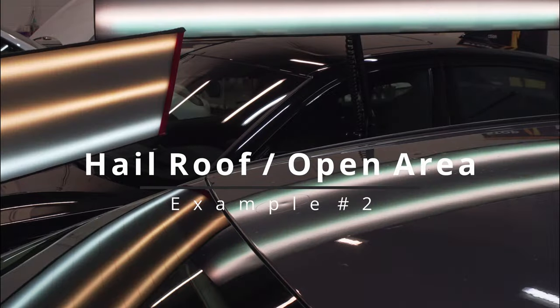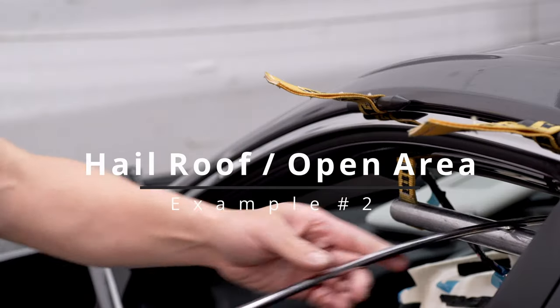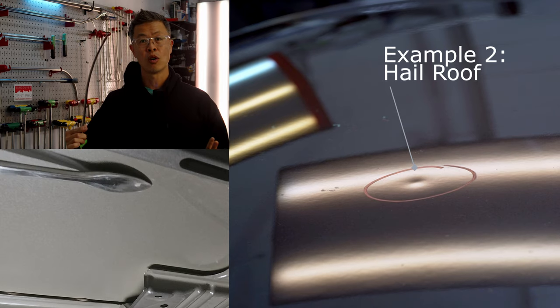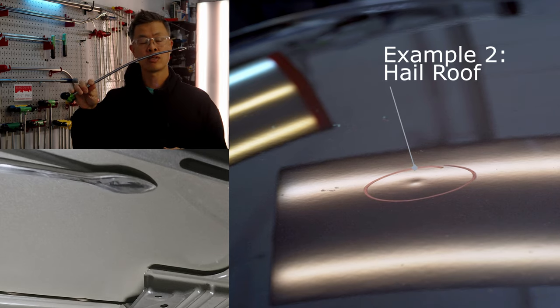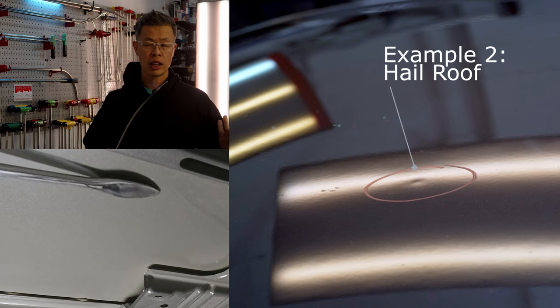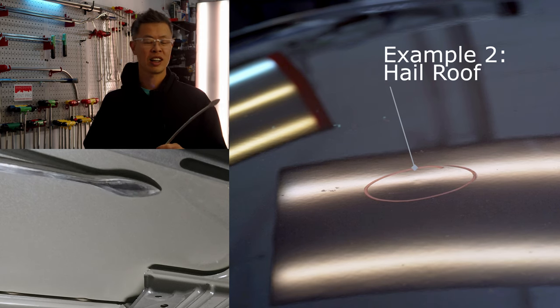The second and third examples are on a roof of the same hail car. It's pretty light hail. The first one is out in the open. So this is the short one. I used the 30-inch one off of a window monkey bar.